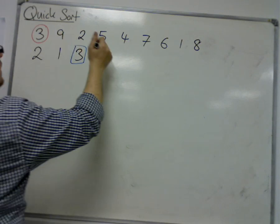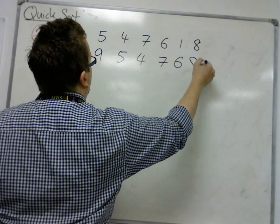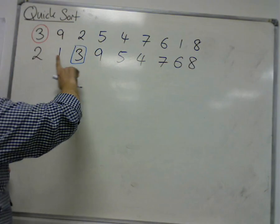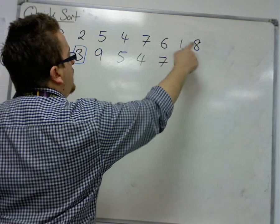Okay, and we've got 9, 5, 4, 7, 6, and 8. That's maintaining the order in which they were in the original list.